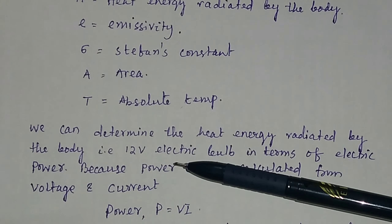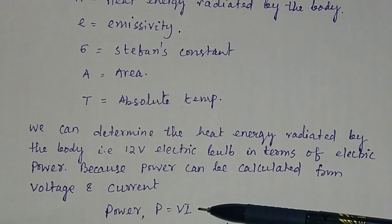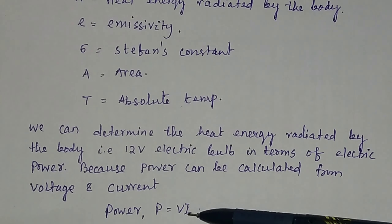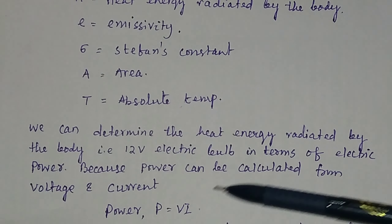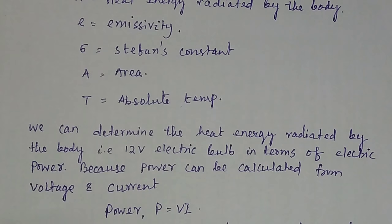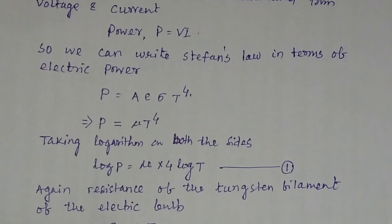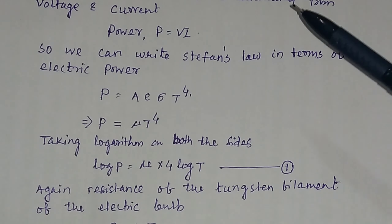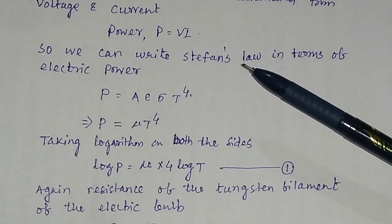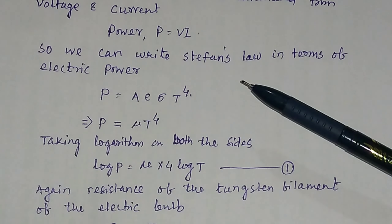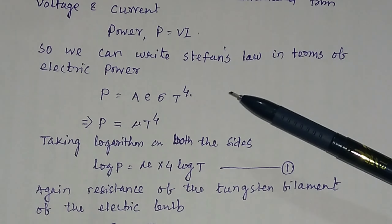This is the voltmeter connected in parallel, and you have a milliammeter which is connected in series to the circuit, and you have a 12 volt bulb, which is connected in series to the circuit.